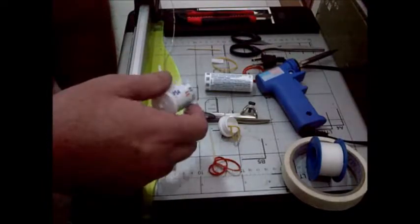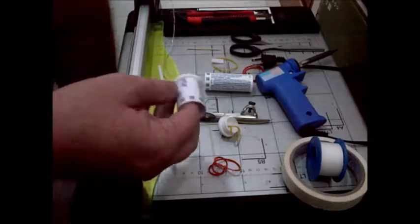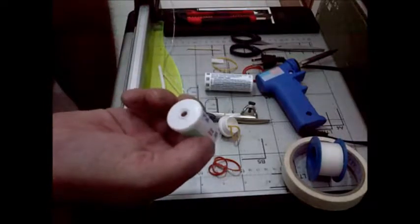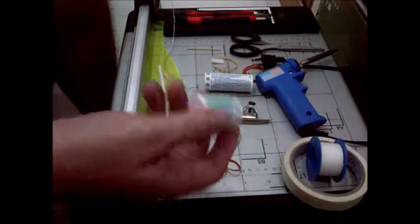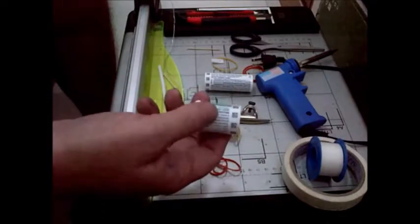Today we're going to look at the science unit, specifically the energy unit, and we're going to build my version of the classic cotton reel engine, cotton reel rubber band engine.